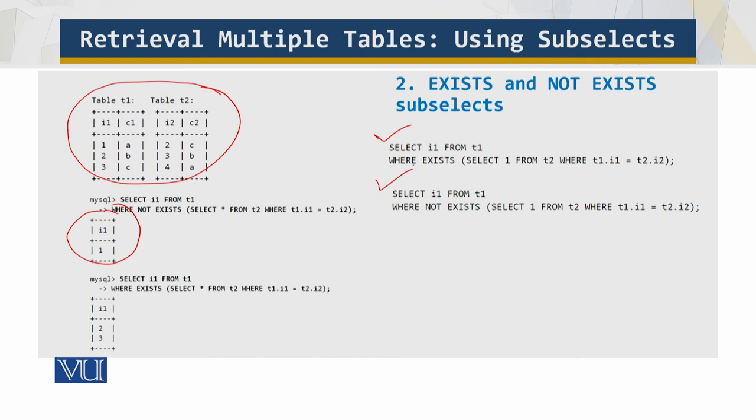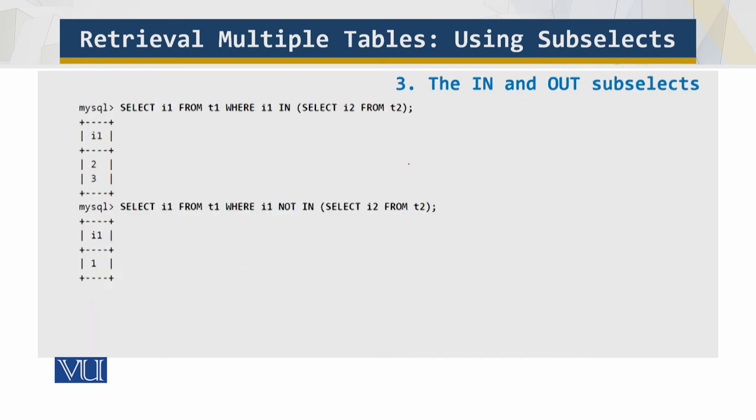Let's look at the IN and NOT IN subselects. The IN and NOT IN forms of subselects should return a single column of values from the inner select to be evaluated in a comparison in the outer select. For example, the preceding EXISTS and NOT EXISTS queries can be written using IN and NOT IN syntax as follows.